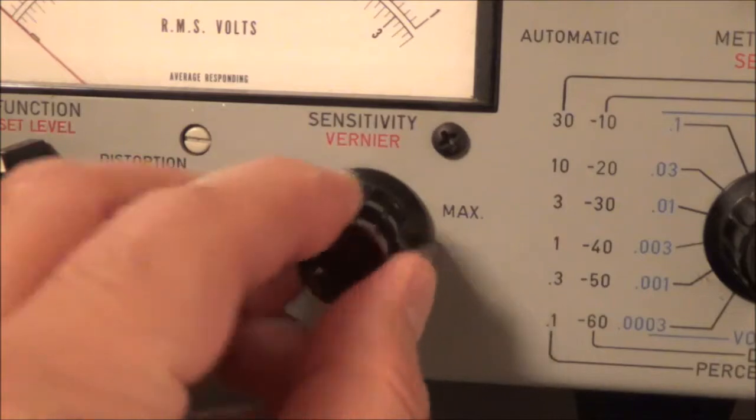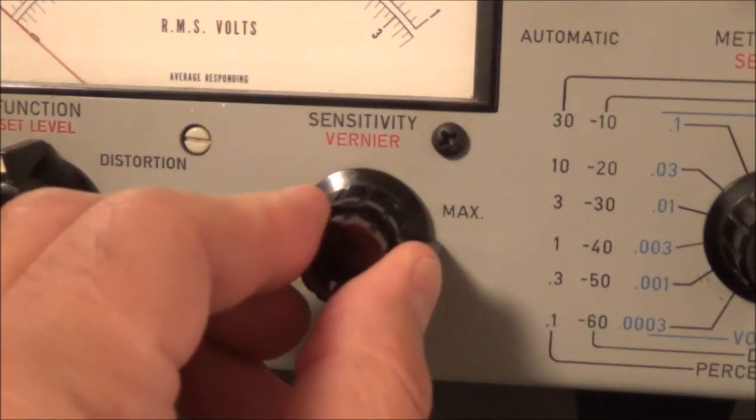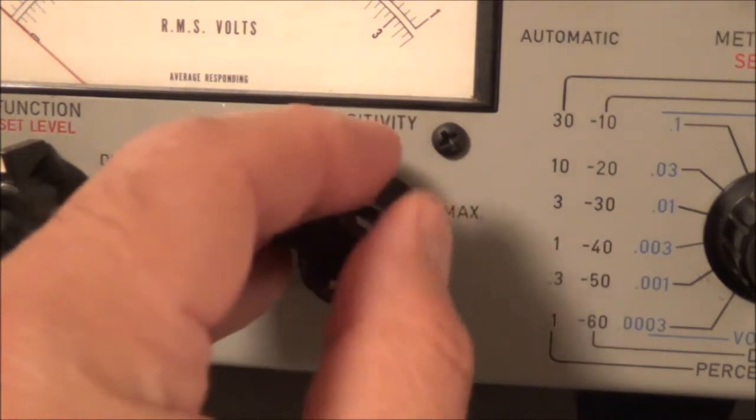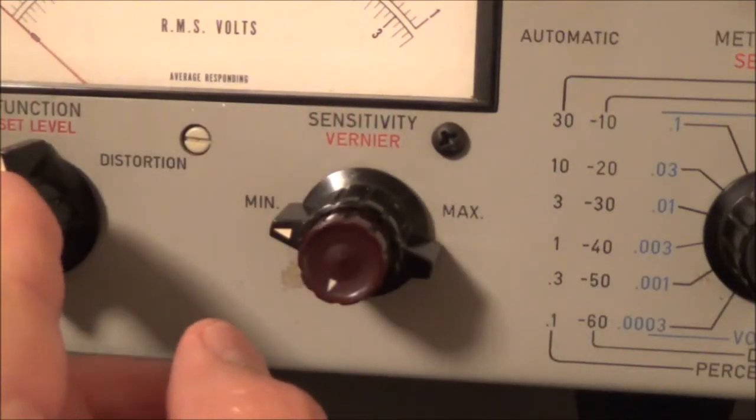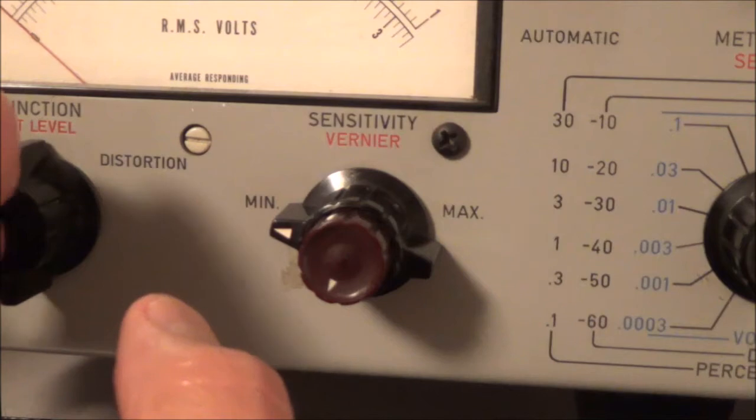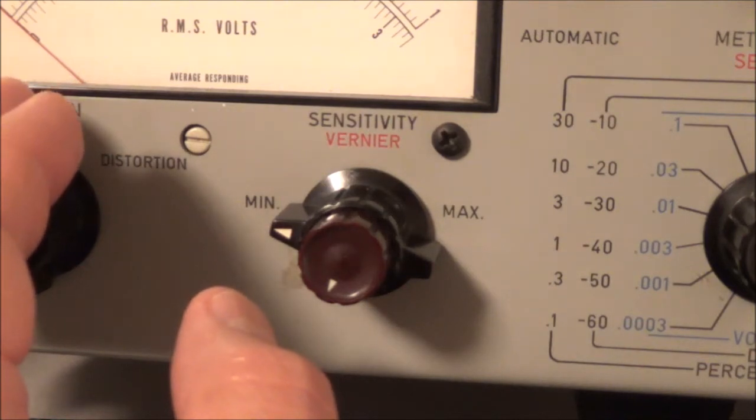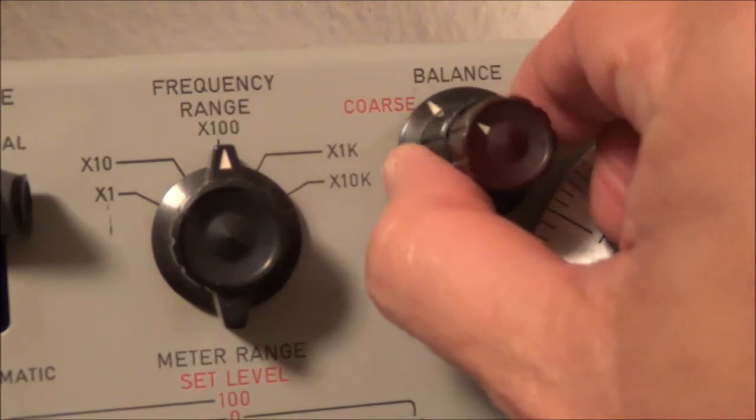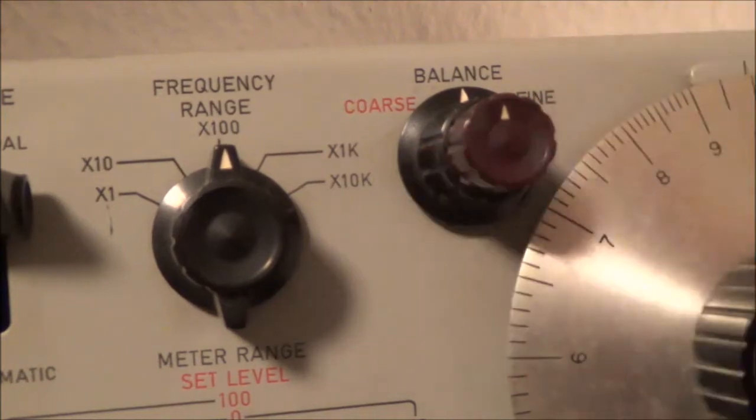So with this switch, the sensitivity switch, we set that to basically minimum, which would be counterclockwise. And this vernier control here, same thing with that. We set that counterclockwise all the way. And we got the meter switch to set level. That's the switch which we're going to use now to calibrate this thing and get it ready. And we want here the coarse and the fine controls set to the center position.